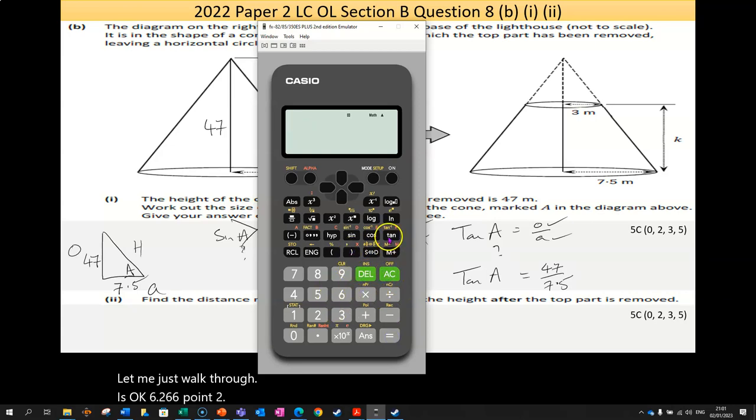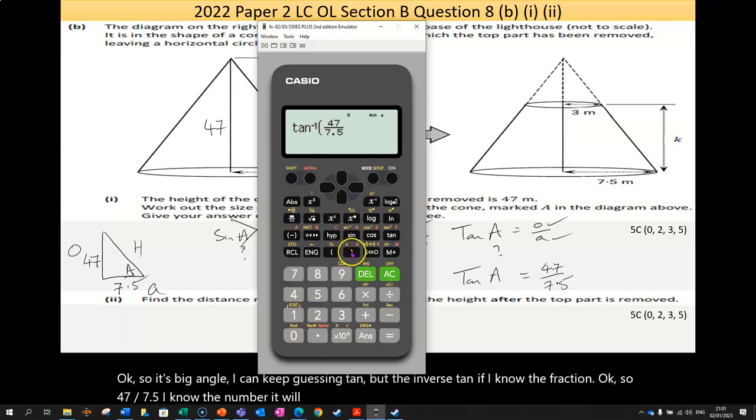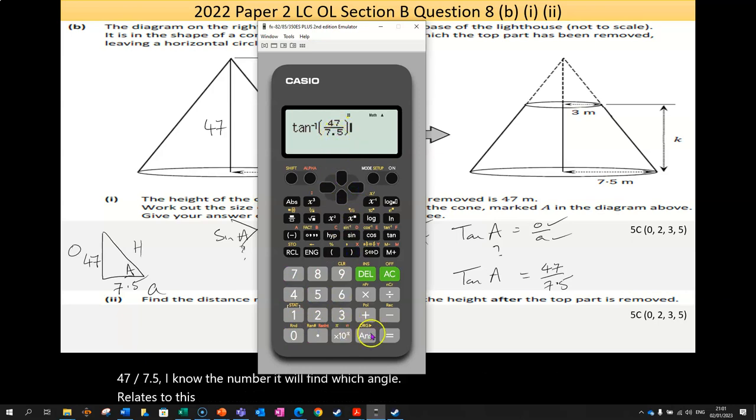Now, I can keep guessing tan, but the inverse tan, if I know the fraction, so 47 over 7.5, if I know the number, it will find which angle relates to this number exactly, not me guessing. And I got 80.9. So, I can, I suppose, denote that as A is equal to inverse tan of that number 47 over 7.5. And then, we said A was equal to, I've forgotten already, 80.93.